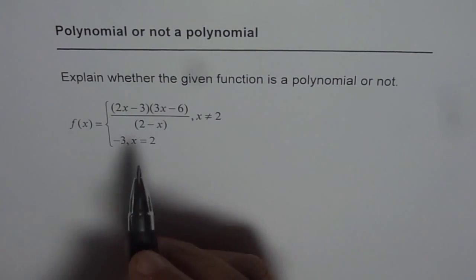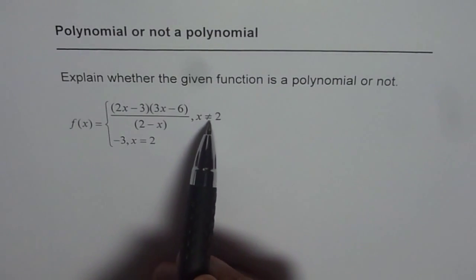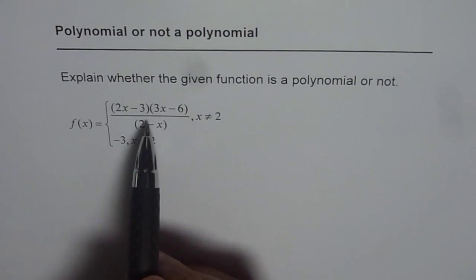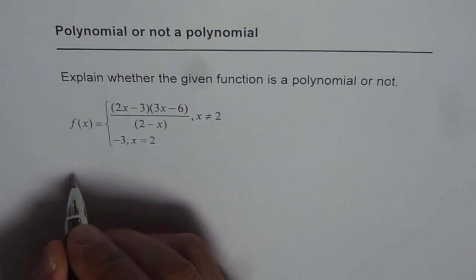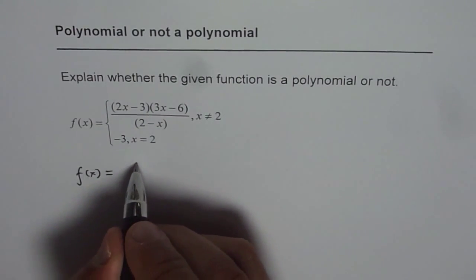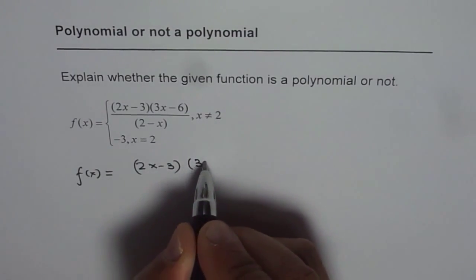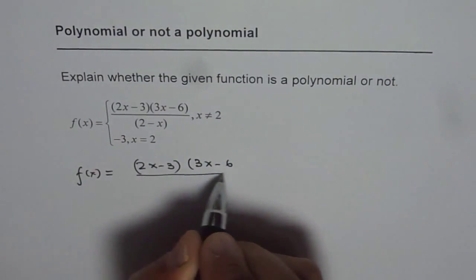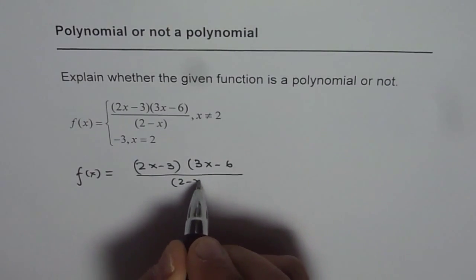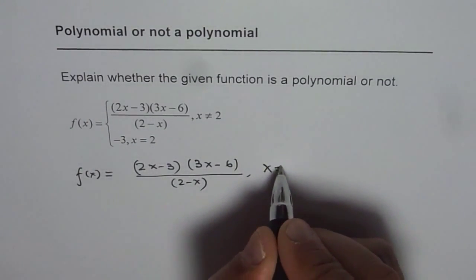So let's see this function. We have f of x equals to something when x is not equal to 2. Now what is that something? Let me simplify that. So f of x is equal to 2x minus 3 times 3x minus 6 divided by 2 minus x, and this is when x is not equal to 2.